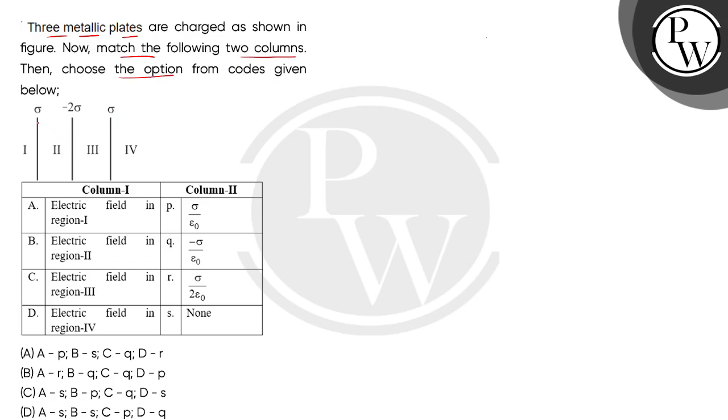So children, we have seen three metallic plates and we have to consider these four regions. According to this, we have to find electric intensity in the proper field and match these two columns and find the proper parts.